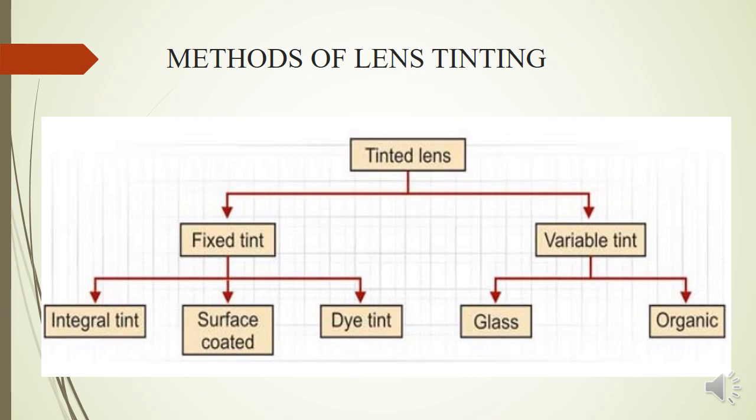For variable tints, there are glass-based and organic (plastic) versions. In glass, silver chloride is generally used, whereas in organic lenses, diaryl naphthopyrans are used to produce the photochromic tinting effect.